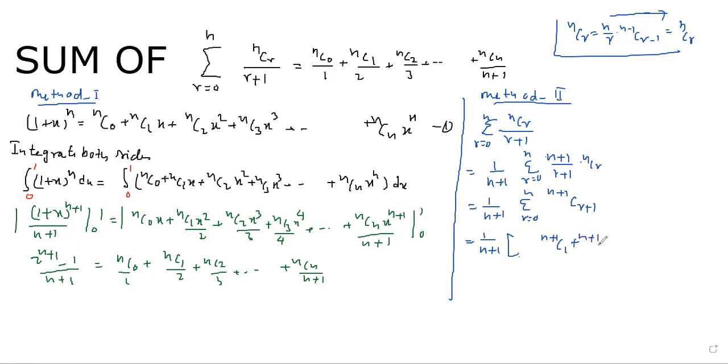Likewise, n plus n, c n plus. Now we have added this, n plus 1, c0, and subtract, plus 1, c0. So you can see that this is 1 upon n plus 1, and this is equal to n plus 1, so this is equivalent to 2 to the power n plus 1 minus 1 upon n plus 1.